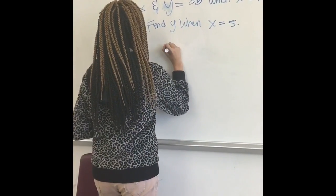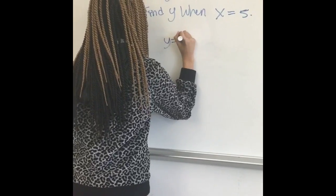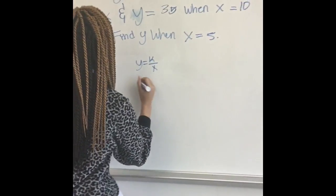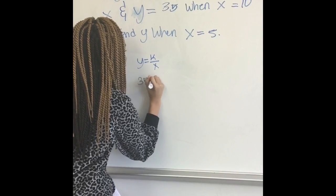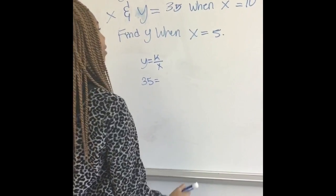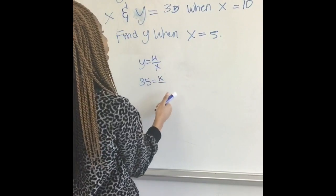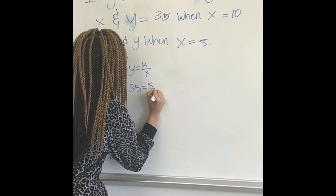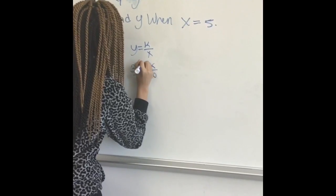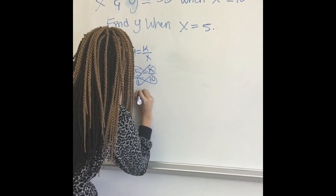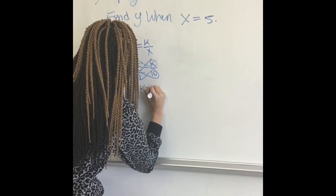The formula is y equals k over x. Y is equal to 35. 35 equals k over x. We don't know what k is, so we leave k. And x is equal to 10. And when you cross multiply, you get k equals 350.